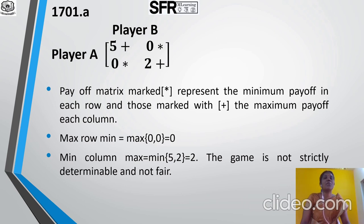So, what is the Maximum of Row Minimum? The maximum of {0, 0} = 0. Minimum of Column Maximum = Minimum of {5, 2} = 2. Since Maximum of Row Minimum ≠ Minimum of Column Maximum, the game is not strictly determinable and not fair. Note: if Maximum of Row Minimum = Minimum of Column Maximum = 0, the game would be fair.